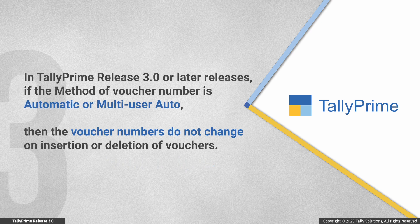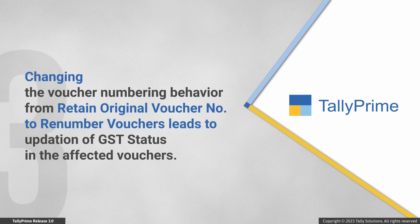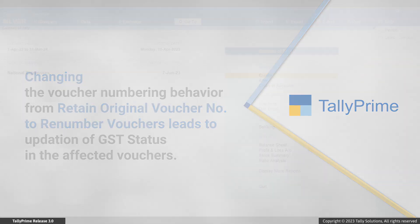When you have automatic or multi-user auto method of voucher numbering in a company created or migrated to TallyPrime release 3.0 or later releases, by default the original voucher numbers get retained despite insertion or deletion of vouchers. This ensures that the voucher numbers of transactions uploaded on GST returns while filing remain unaffected. However, if you change the voucher numbering behavior to renumber vouchers in voucher types, the voucher numbers of the vouchers get affected, and as a result the GST status of the affected vouchers gets updated.